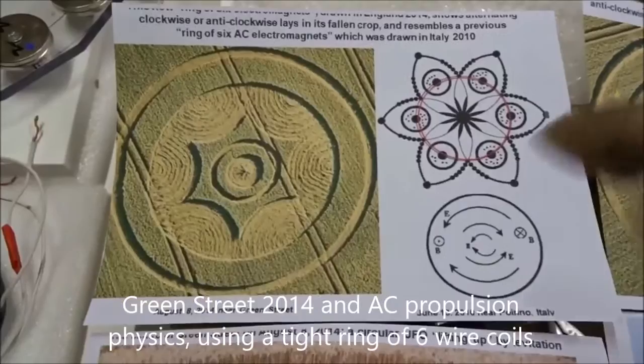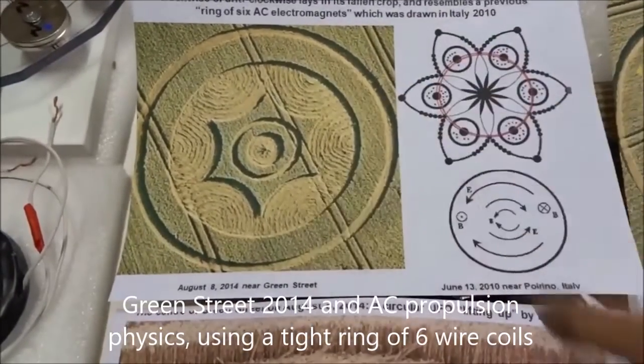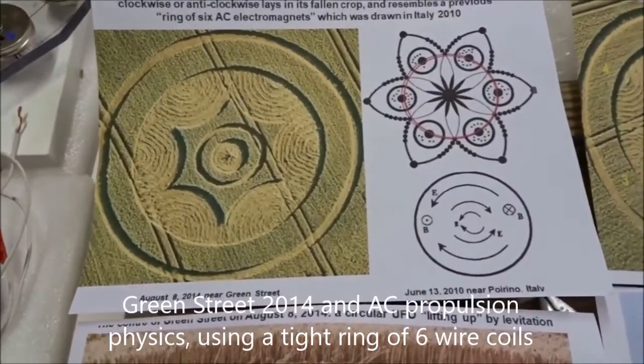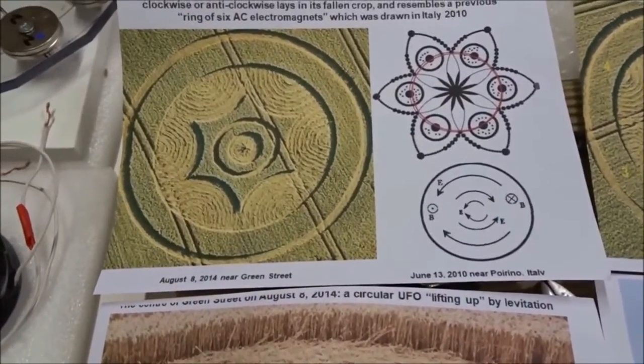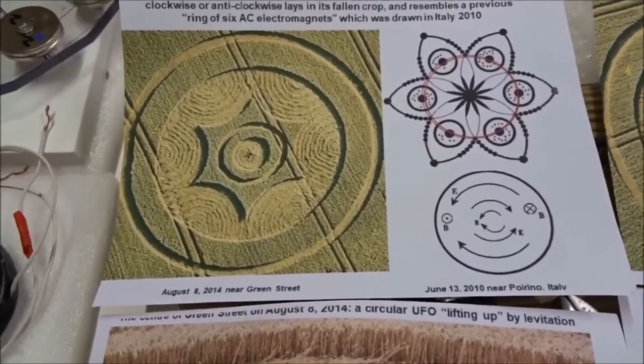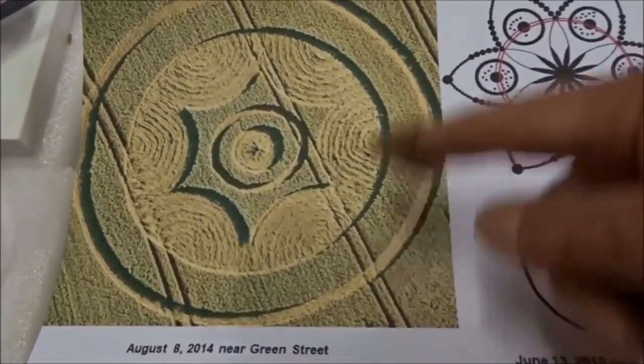Today in the lab we wish to study this ring of six wire coils, or electromagnets, which were drawn in crops on August 8th, 2014, not far from Avebury on Green Street, and you can see how the current weaves back and forth.